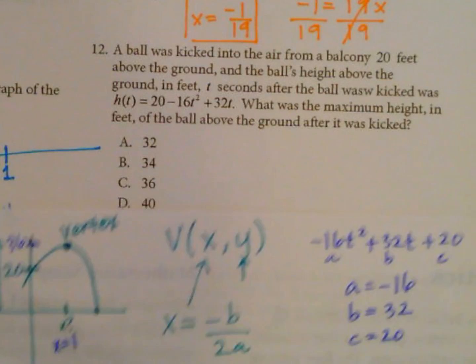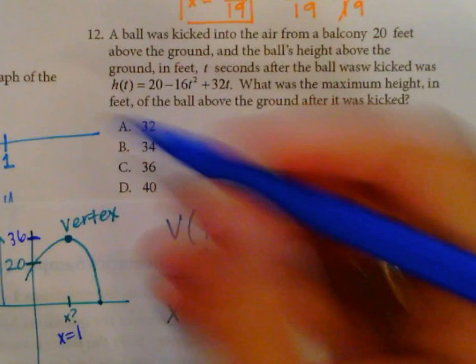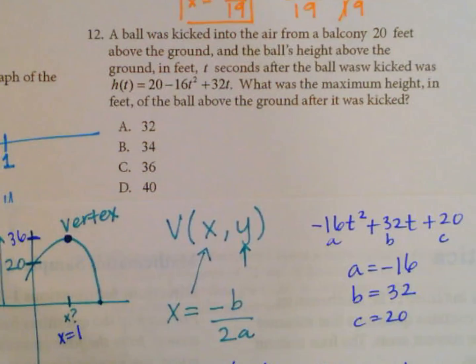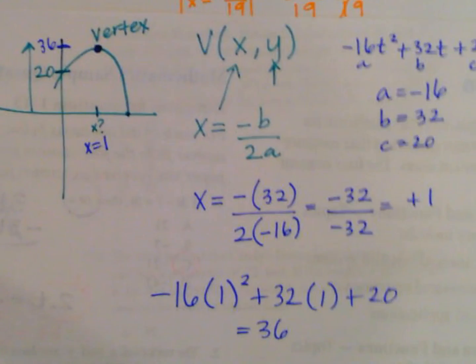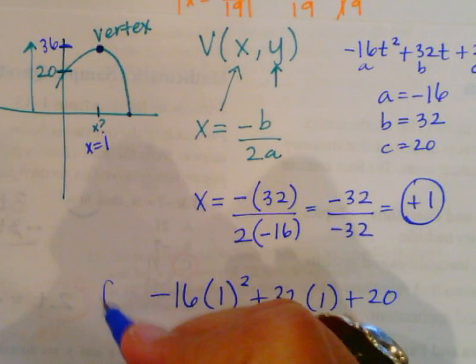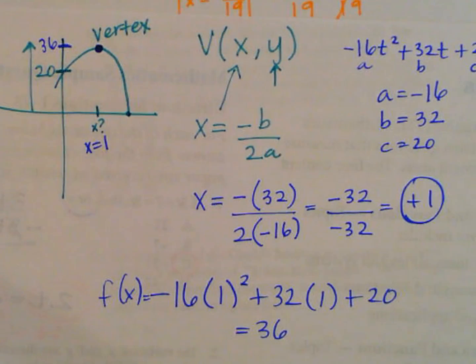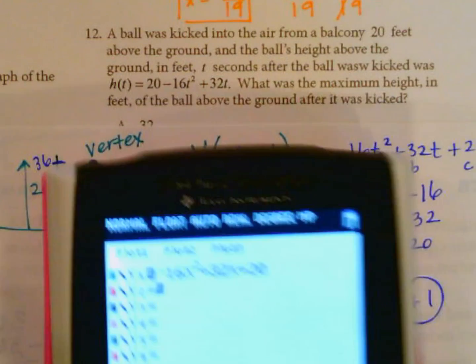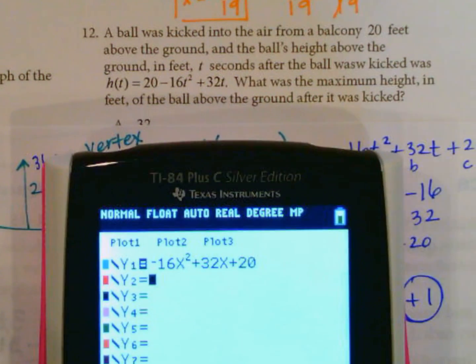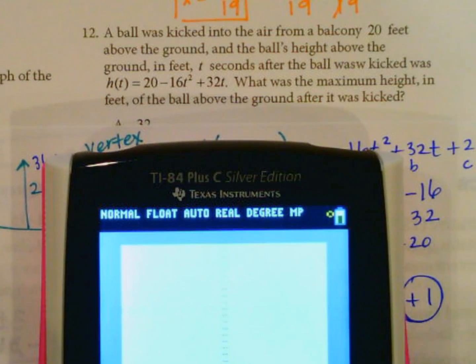So back to our question: what was the maximum height in feet of the ball above the ground after it was kicked? The maximum height occurs at the vertex. We found the x coordinate of the vertex was positive 1, we plugged that into the function, and we got 36. Now another way to do this, you can go ahead and graph the function. So again, it should be in standard form, so I moved it into the correct form and we're going to graph it.